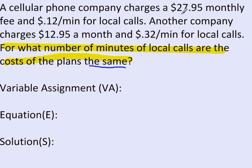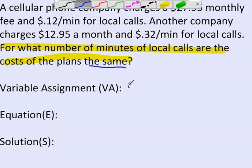We're going to do our variable assignment. After reading that question, we know we don't know the number of minutes. So that's what we're going to find. It says for what number of minutes, so we're going to use M for number of minutes. If you want to be specific, you can say of local calls. So M is for number of minutes here.